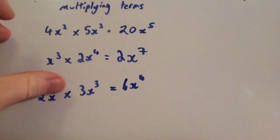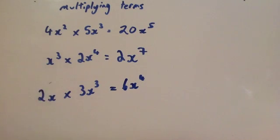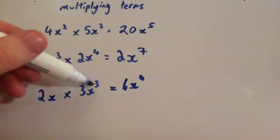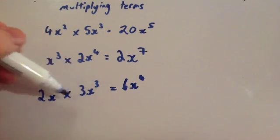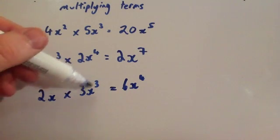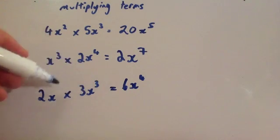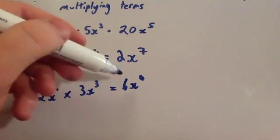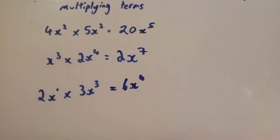Finally, if you had something like 2x times 3x cubed, the x stands for x to the power of 1. So you add the powers: 2 times 3 is 6, and x to the 1 times x to the 3 gives x to the 4. You'd get 6x to the 4.